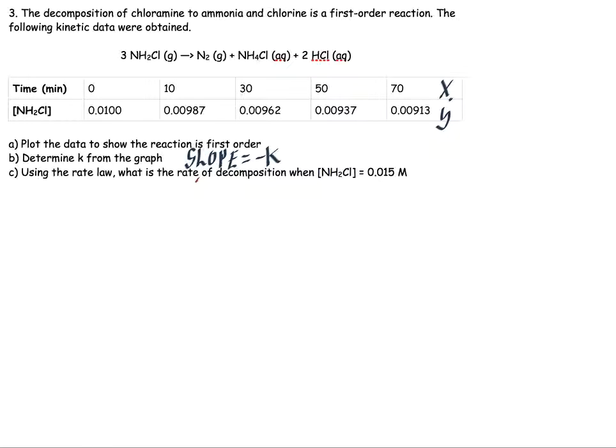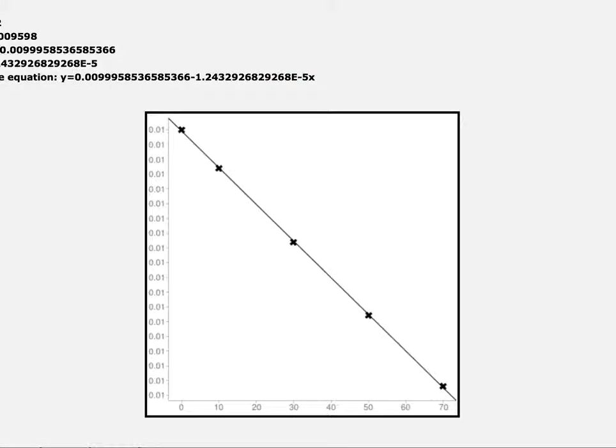What I did was I went ahead and placed this information on a website that you'll find in the description and basically plotted the data and it found the slope. It's kind of cut off the screen here, but here's the slope: minus 1.24 times 10 to the minus 5. The slope is negative since it's sloping down and it's a pretty straight line here.